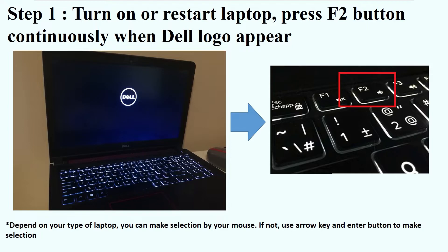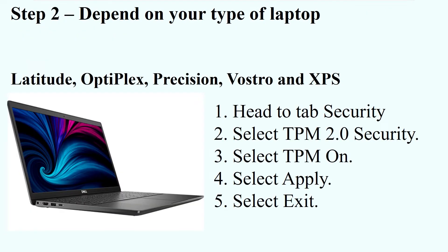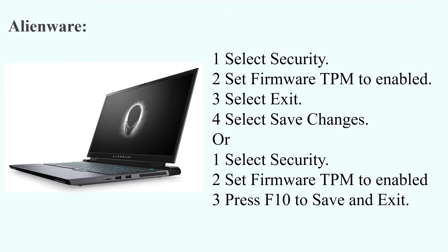For Dell Latitude, Optiplex, Precision, Vostro, and XPS laptops: Step 1, go to the Security tab. Step 2, select TPM 2.0 Security. Step 3, select TPM On. Step 4, select Apply. Step 5, select Exit.